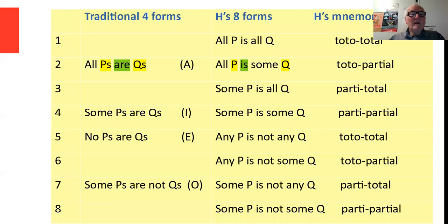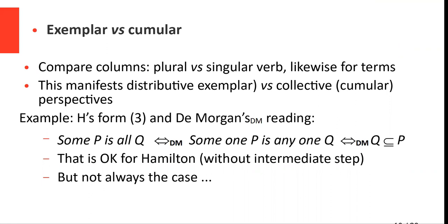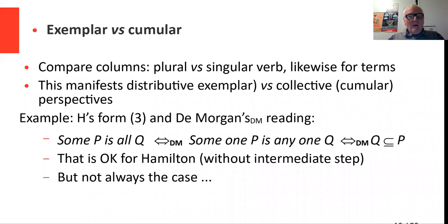Let's take one example: Hamilton's form three, 'some P is all Q.' De Morgan read this as saying 'some one P is any one Q,' getting rid of 'all' for 'any.' He finally decides that must mean Q is a subset of P — that is, all Q's are P's. That interpretation, in the end, is okay for Hamilton, though he doesn't go through the intermediate step.